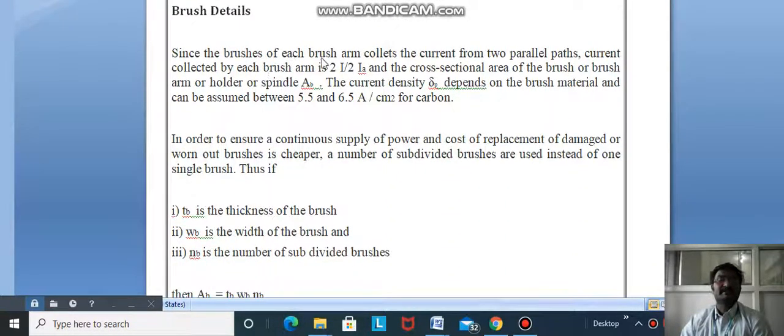Since the brushes of each brush arm collect current from two parallel paths, current collected by each brush arm is Ia/2. The cross-sectional area of the brush Ab equals Ia divided by 2 times current density δ. The current density depends on brush material and can be assumed between 5.5 and 6.5 amps per cm² for carbon.